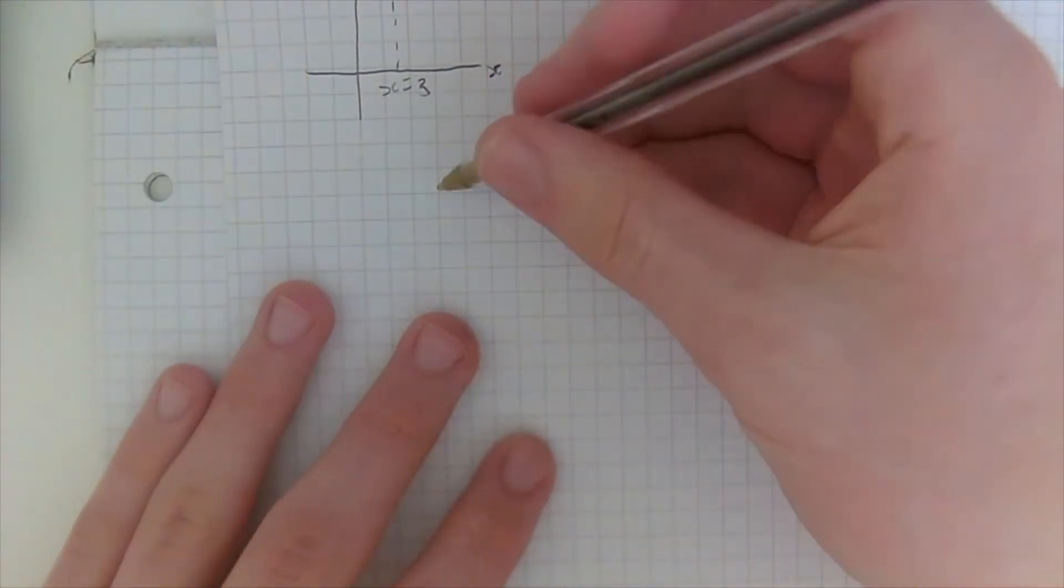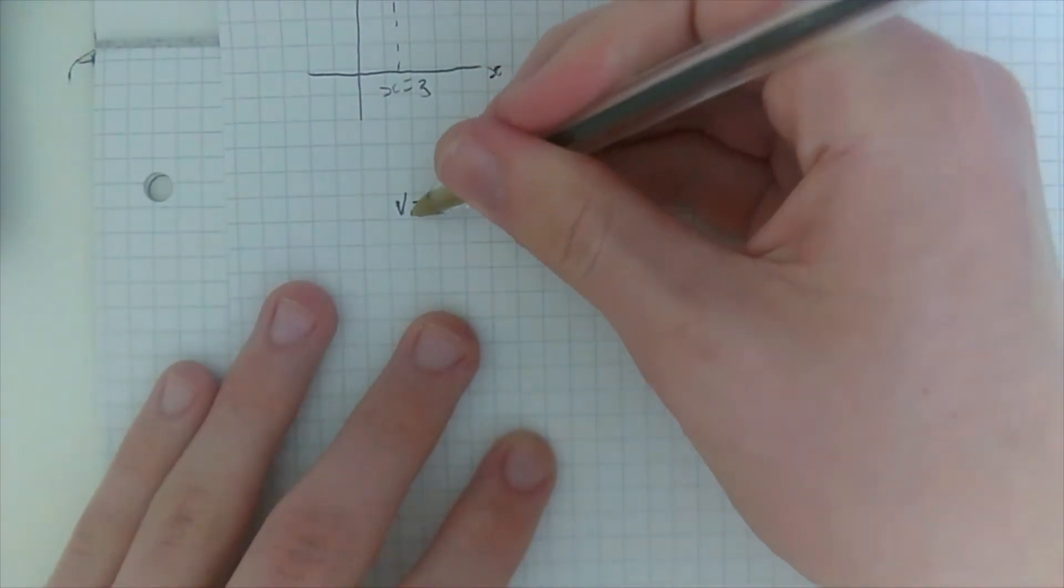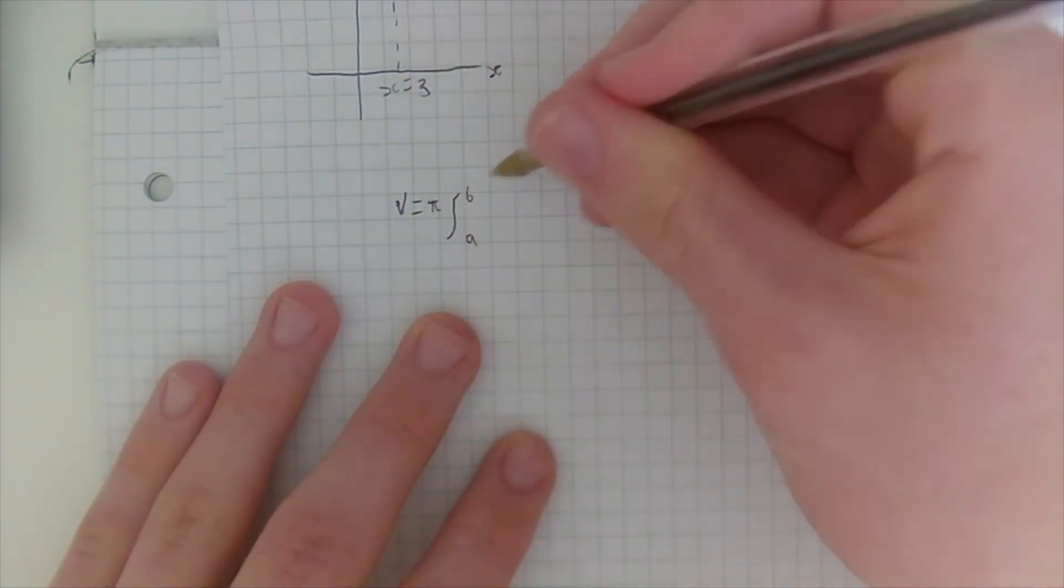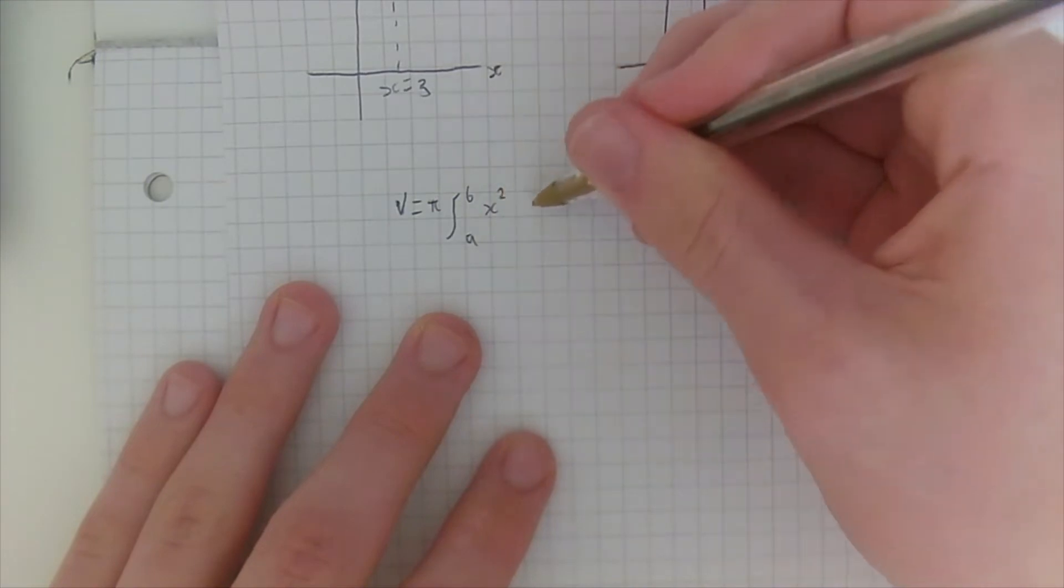Right, now's the maths bit. We're going to use the equation volume equals pi the integral from a to b of x squared dy.